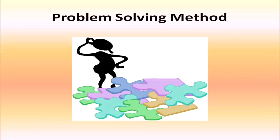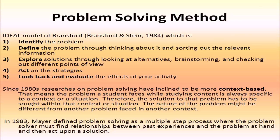Now we will discuss the problem solving method. There is a model called the IDEAL model by Bransford and Stein, given in 1984. It follows a number of steps. The first step is to identify the problem along with the children. Defining the problem through thinking about it and sorting out relevant information. Exploring solutions through looking at alternatives. Brainstorming, in which children are asked to give as many ideas regarding the problem as come to their mind, and checking out different points of view and multiple perspectives. Acting on the strategies and working them out. Looking back and evaluating the effects of your activity.